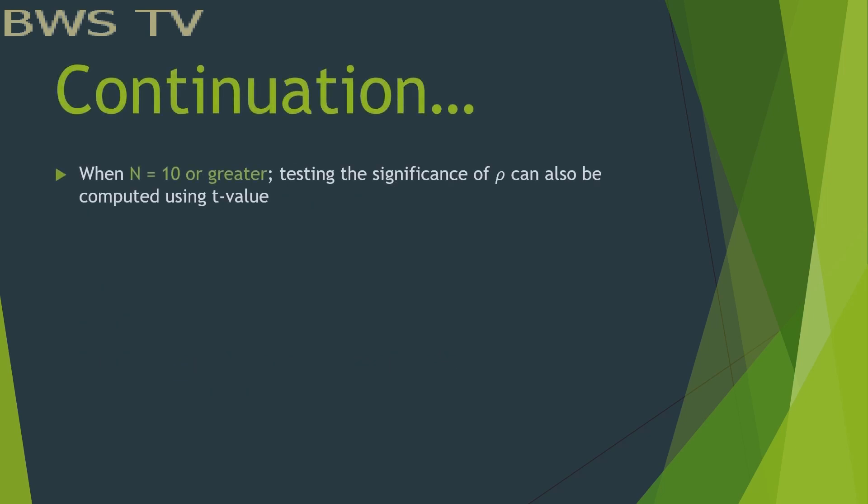But when n is 10 or greater, testing the significance of rho can also be computed using t-value with the formula t equals rho times the square root of n minus 2 over 1 minus rho squared.